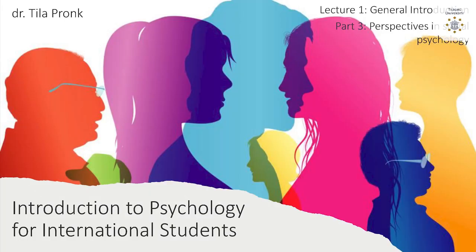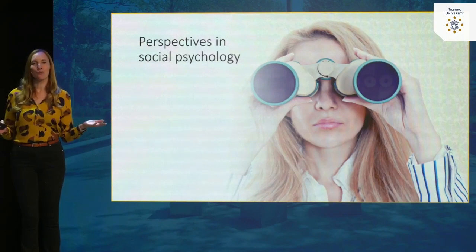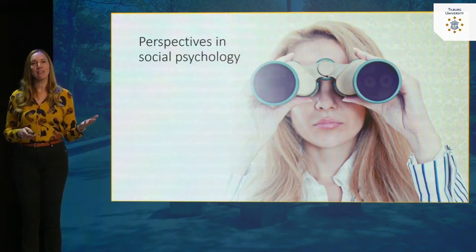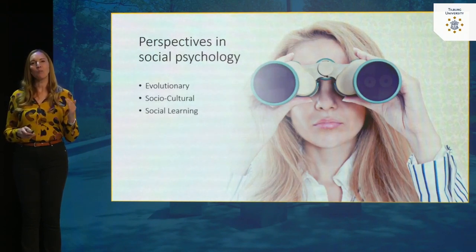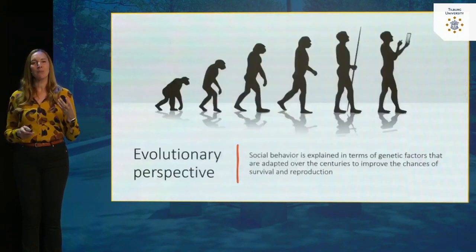This is part three of lecture one. In this part we're going to talk about perspectives in social psychology. Social psychology is a discipline within psychology, but within social psychology there are also different schools — different views on the ways we try to explain human behavior. I'm going to zoom into three of them: the evolutionary perspective, the social cultural perspective, and the social learning perspective.